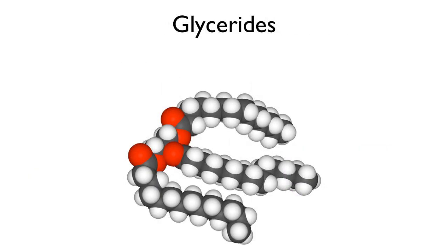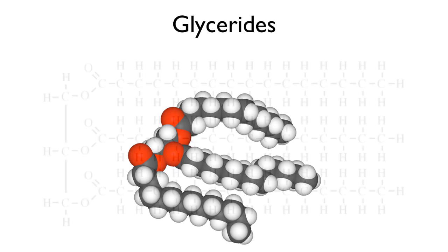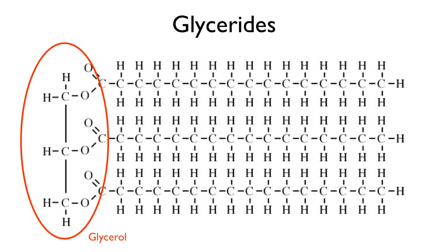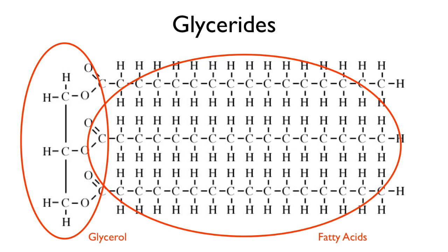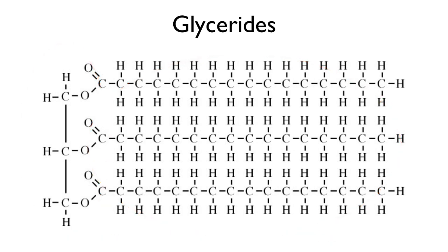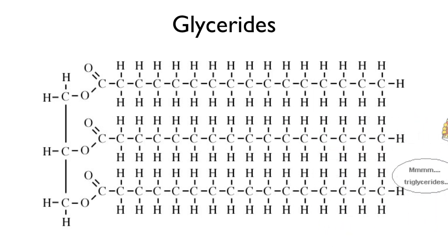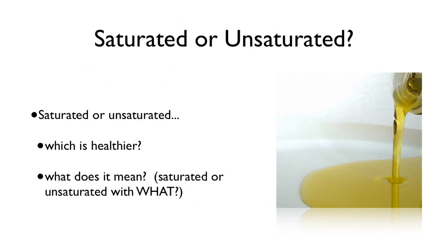We're going to spend the rest of the video talking about the glycerides. When we talk about diet, this is the group we're really talking about. A triglyceride has a backbone of glycerol with three carbons, and fatty acid tails attached. When you talk about dietary fats, you're generally talking about triglycerides. One of the most important things about them is what you see on food labels all the time: saturated or unsaturated — which one is healthier, and what does it mean?